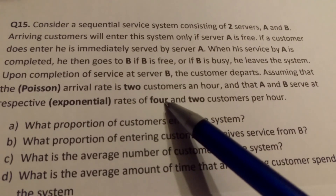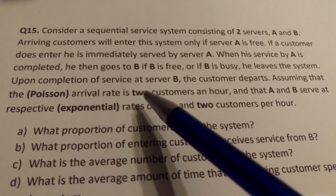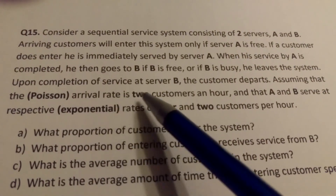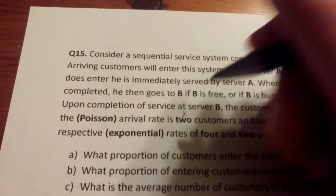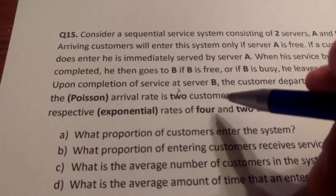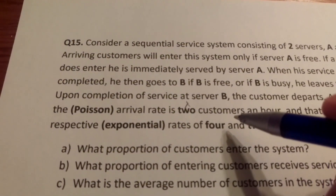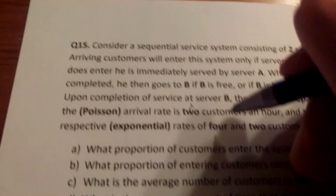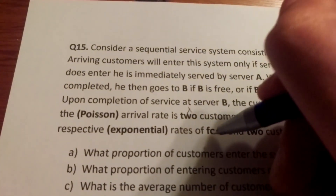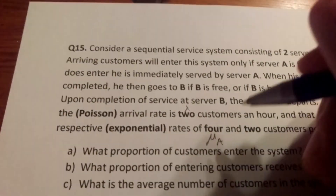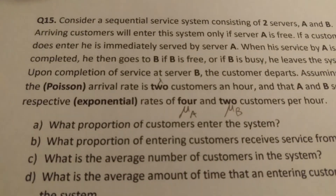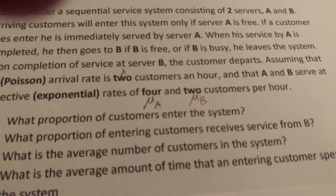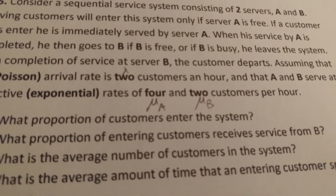For this question, instead of using numerical values we're going to use symbolic variables. We'll let the arrival rate be λ, the service rate of server A be μ_a, and the service rate of server B be μ_b. This makes it easier — in the end we just substitute the numbers in.